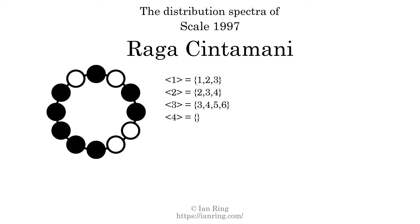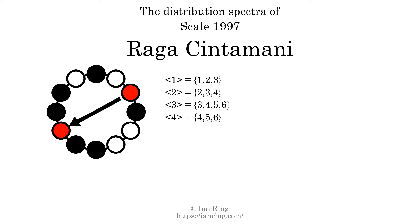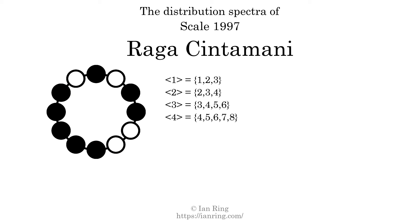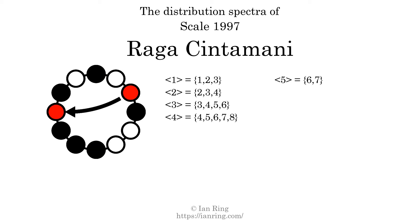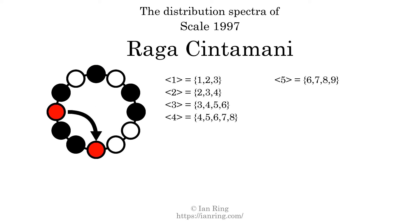The generic interval of 4 scale steps comes in 5 different specific interval sizes: 4, 5, 6, 7, and 8 semitones. The spectrum width of this generic interval is 4. The generic interval of 5 scale steps comes in 4 different specific interval sizes: 6, 7, 8, and 9 semitones. The spectrum width of this generic interval is 3.